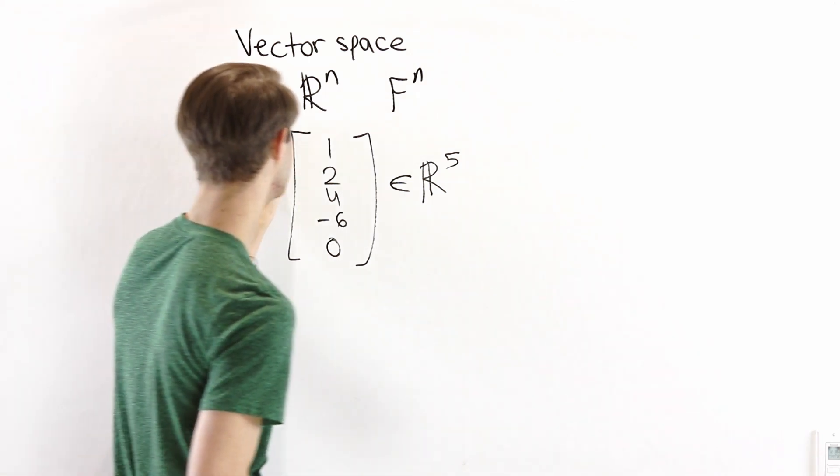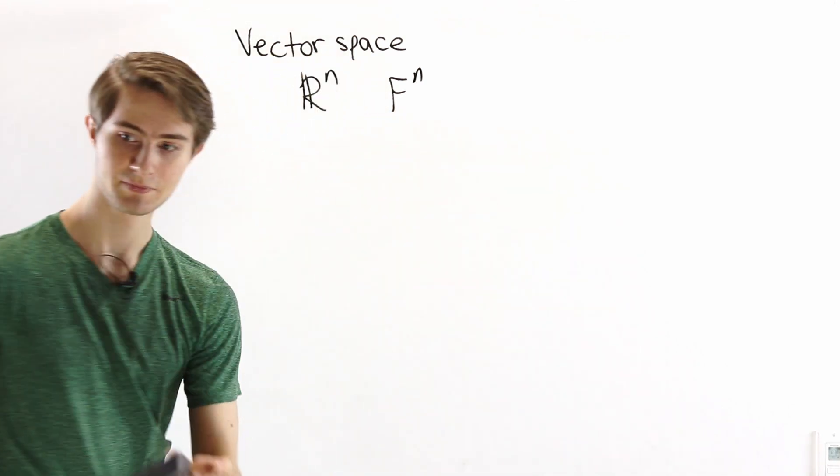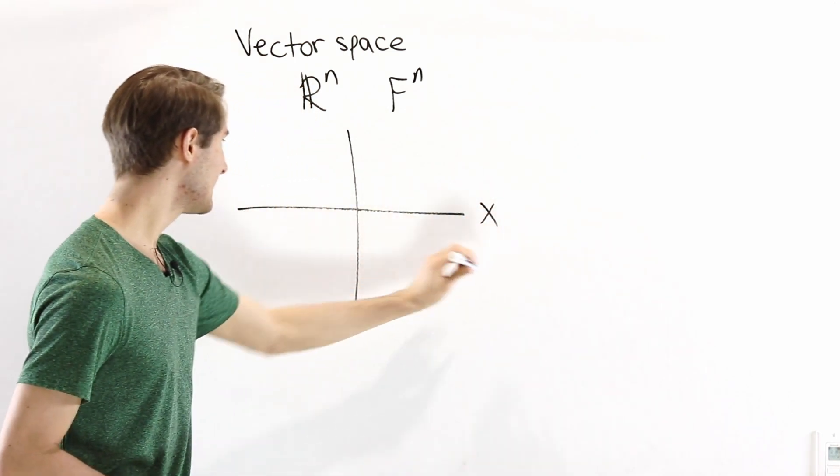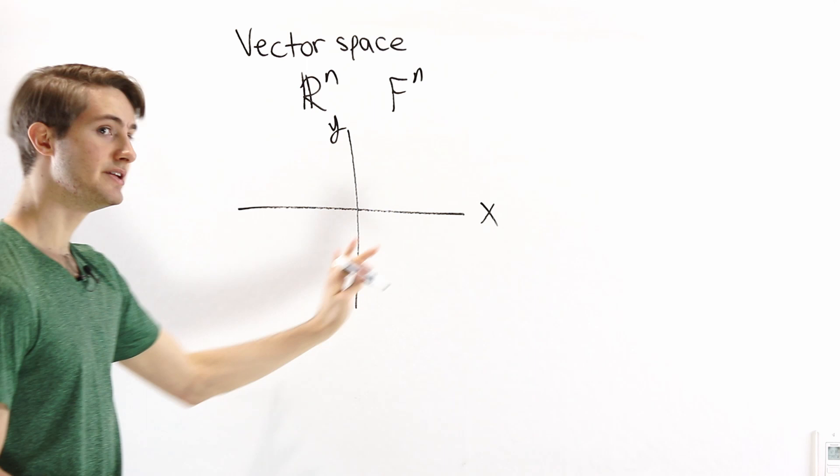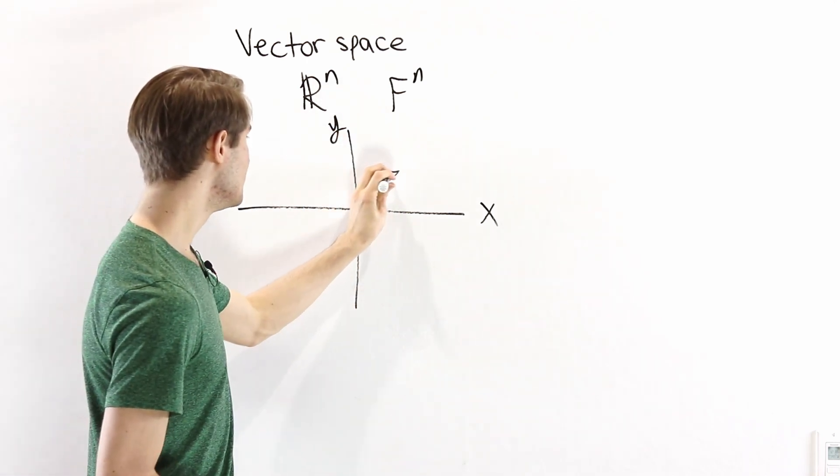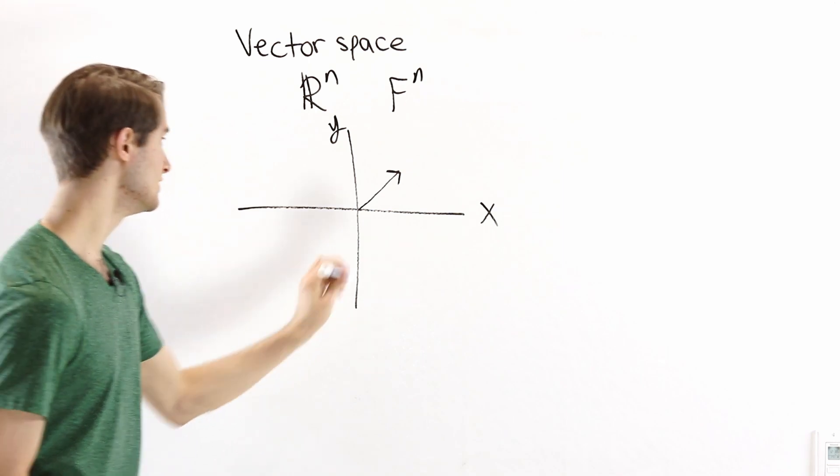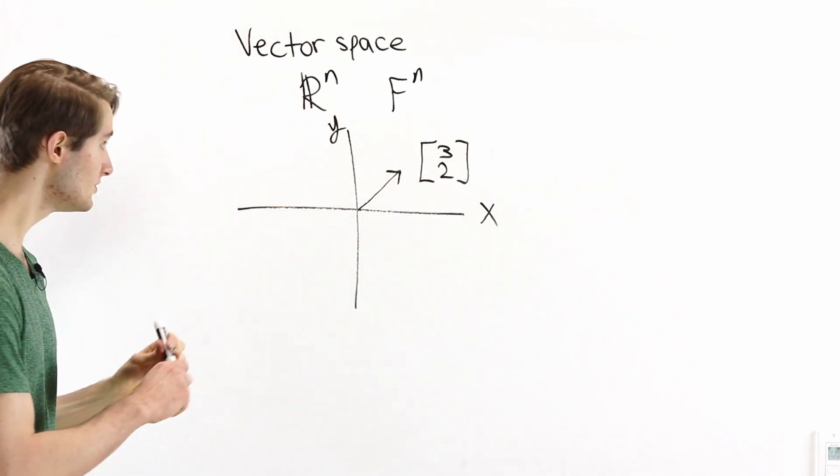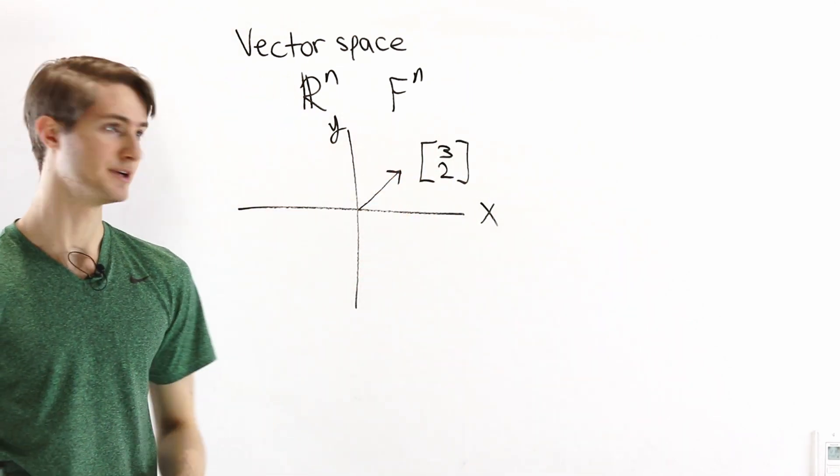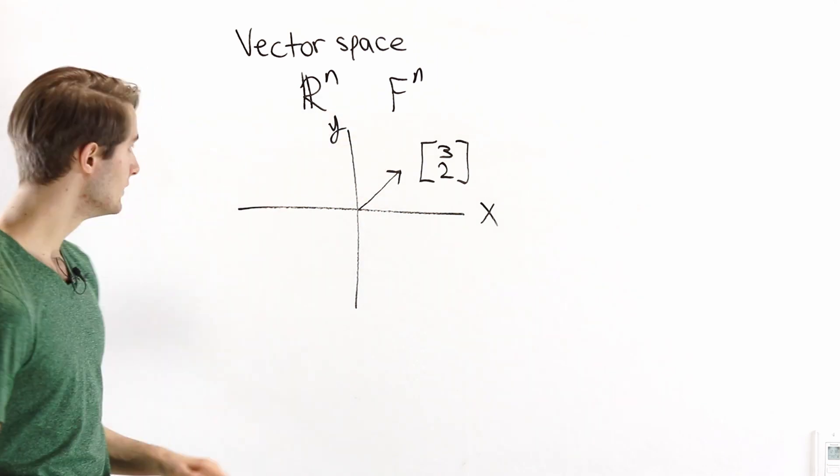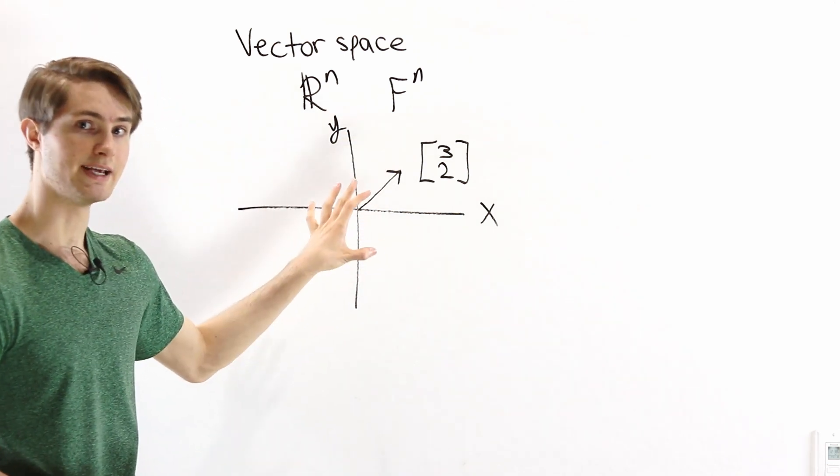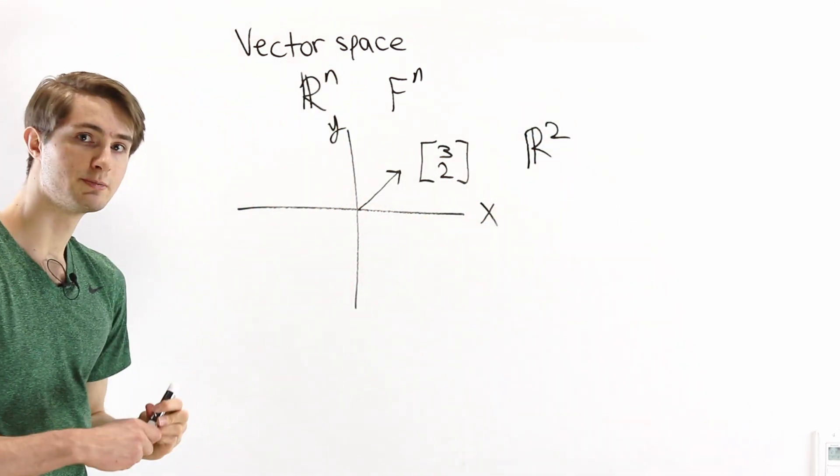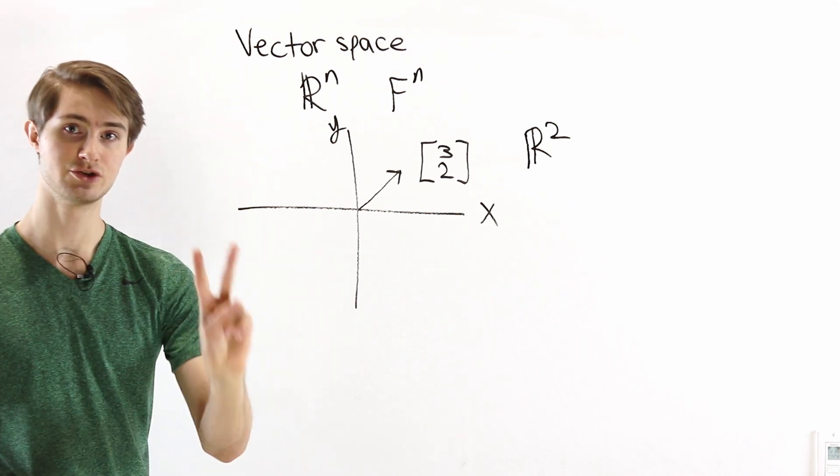We can look at a few specific examples of what a vector space looks like. For example, say we have the 2D plane with the x-axis and the y-axis. This is actually a vector space because we can take a look at an arrow that points from the origin to some point, say 3, 2. We can see that the point is described by two real numbers, the x-coordinate and the y-coordinate. So the xy-plane is a vector space, the same thing as R^2, because all of the points we can describe by their two coordinates.